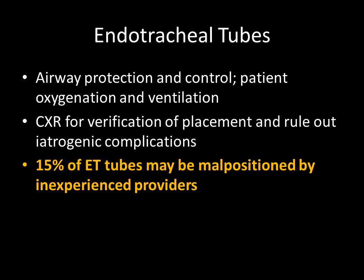ET tubes are common in the ICU. They're often placed to protect or control the airway in patients who are comatose or non-responsive, and this provides an avenue of oxygenation or ventilation in these patients. Chest x-rays are often done after the placement of an ET tube to verify placement but also rule out any iatrogenic complications. Verifying placement is important because 15% of ET tubes may be malpositioned when placed by non-experienced providers.